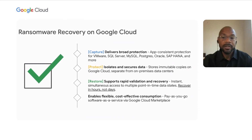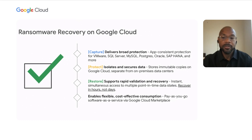With Google Cloud technologies, you can deliver broad protection for your mission-critical workloads by capturing application-consistent point-in-time data states for key environments and applications, such as VMware VMs, SQL Server databases, MySQL, HANA databases, and more. In addition, by storing these immutable data copies on Google Cloud, you can keep them physically separate from your production infrastructure, thereby reducing their susceptibility to easy attack.